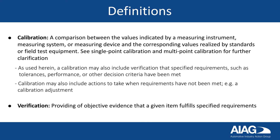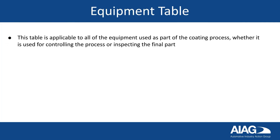Verification refers to the providing of objective evidence that a given item fulfills specified requirements. The equipment verification and calibration table is applicable to all the equipment used as part of the coding process, whether it is used for controlling the process or inspecting the final part.